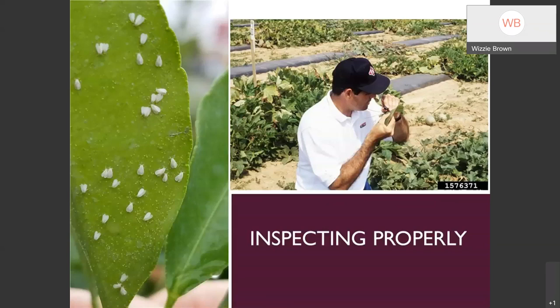Monitoring is important and you have to do it properly. This is usually where people have a downfall, because casually walking through your landscape is not really monitoring. A lot of insects are very small and in hidden locations. You don't have to look at every single plant, but go out, pick a few, flip over the leaves, look on the stem, look around the base and the mulch area, and see what you're seeing.